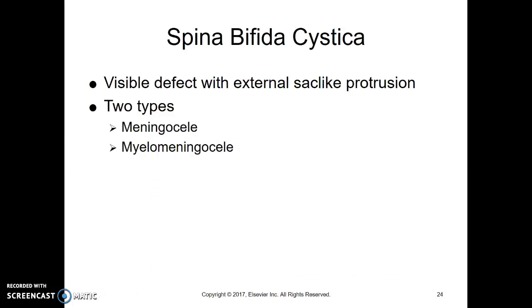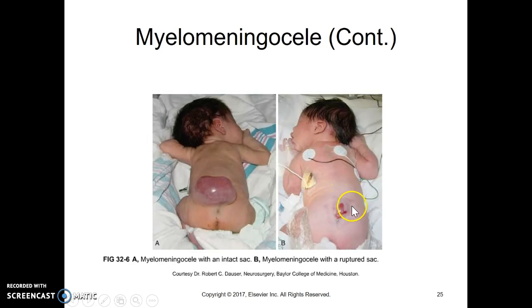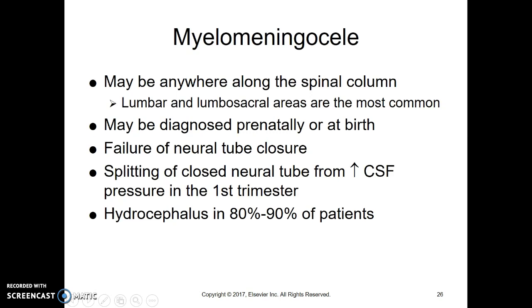The big ones we're worried about with the greatest long-term consequences are spina bifida cystica, particularly myelomeningocele. We can see a baby born with the sac of meninges filled with fluid in the lumbar region. Sometimes that sac has already broken. It can occur anywhere but is usually lumbar or lumbosacral.